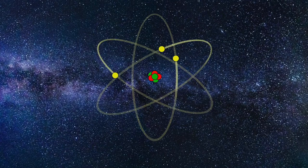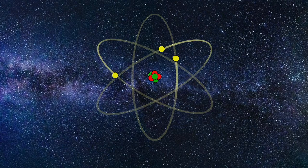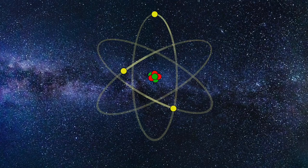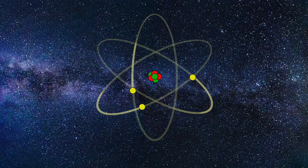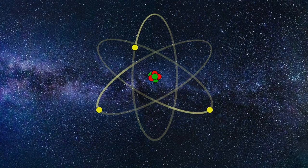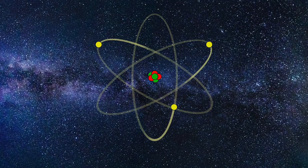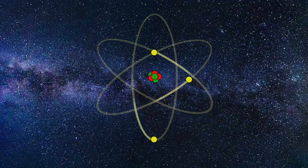Everything in the universe is made of atoms. Atoms have a central nucleus consisting of neutrons and protons. Circling the nucleus, like planets around the sun, are electrons. Electrons carry a negative charge, which balance the positively charged protons.